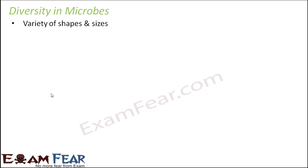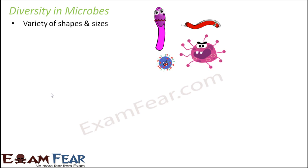Now when we talk about microbes, they actually have a huge diversity. They are seen in a variety of shapes and sizes — some of them are spherical, some are cylindrical, some are extremely tiny, some are a little bigger than others. They come in a variety of sizes and shapes.